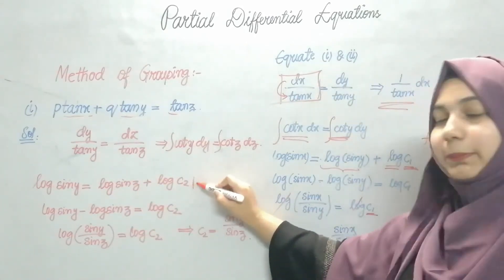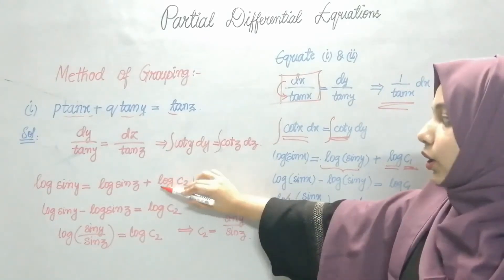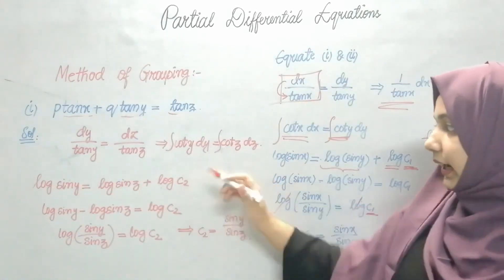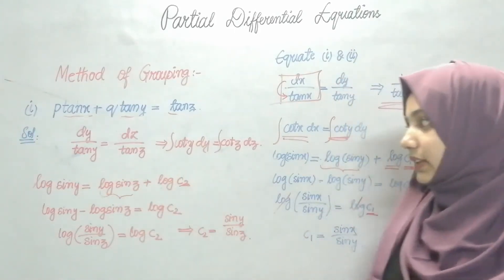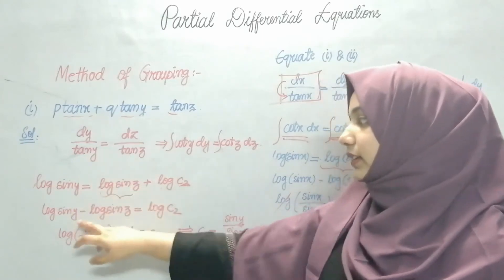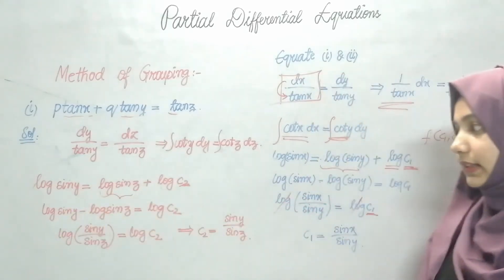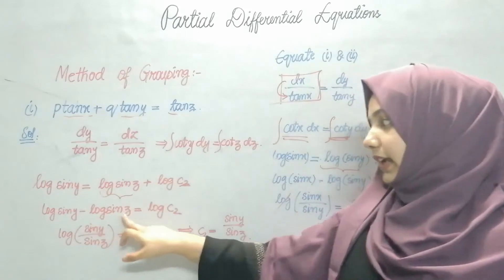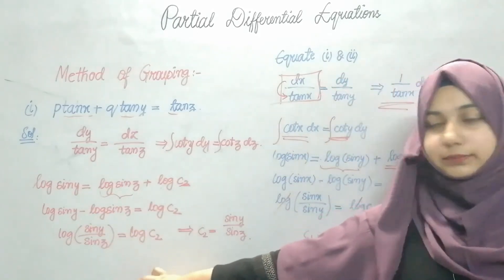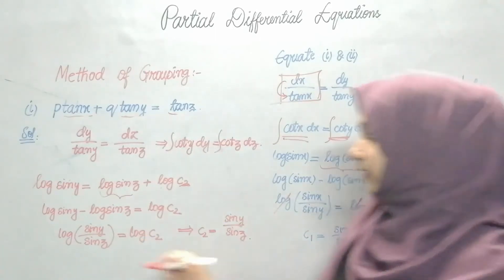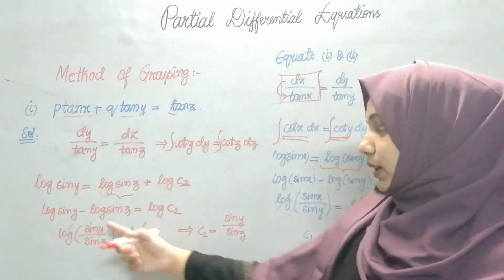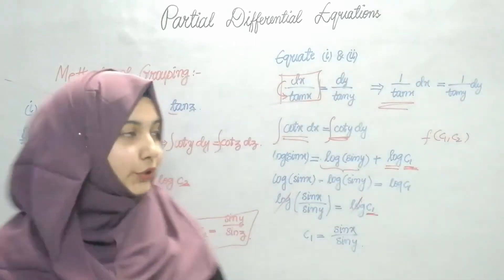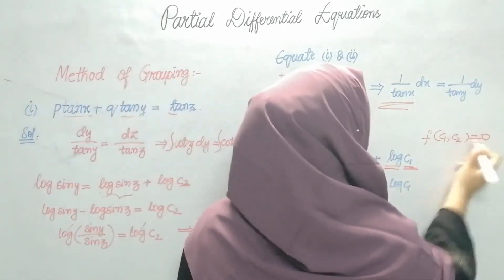I need the value of C2. Log(sin z) is extra on the right side, so I send it to the other side: log(sin y) − log(sin z) = log C2. Applying log m − log n = log(m/n): log(sin y / sin z) = log C2. Cancelling the logs: C2 = sin y / sin z.